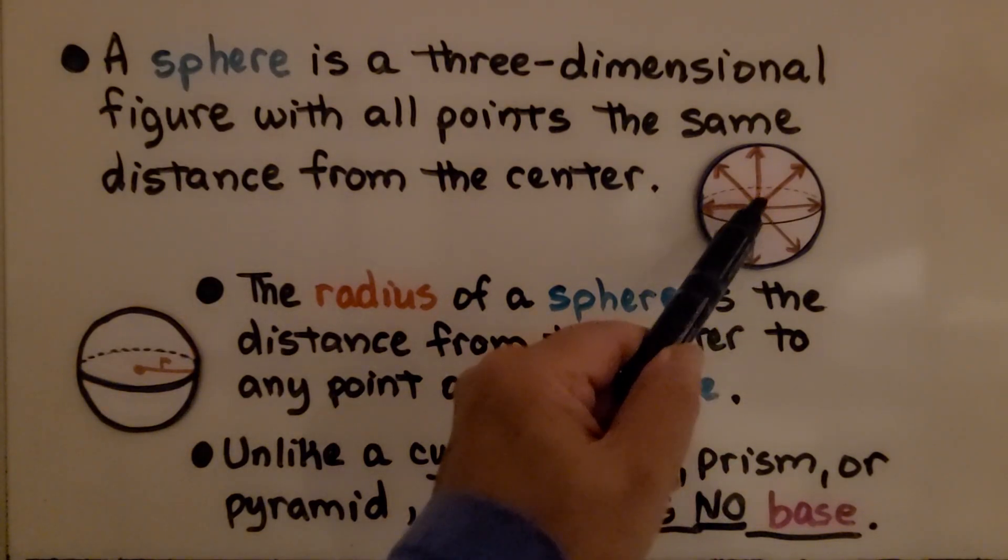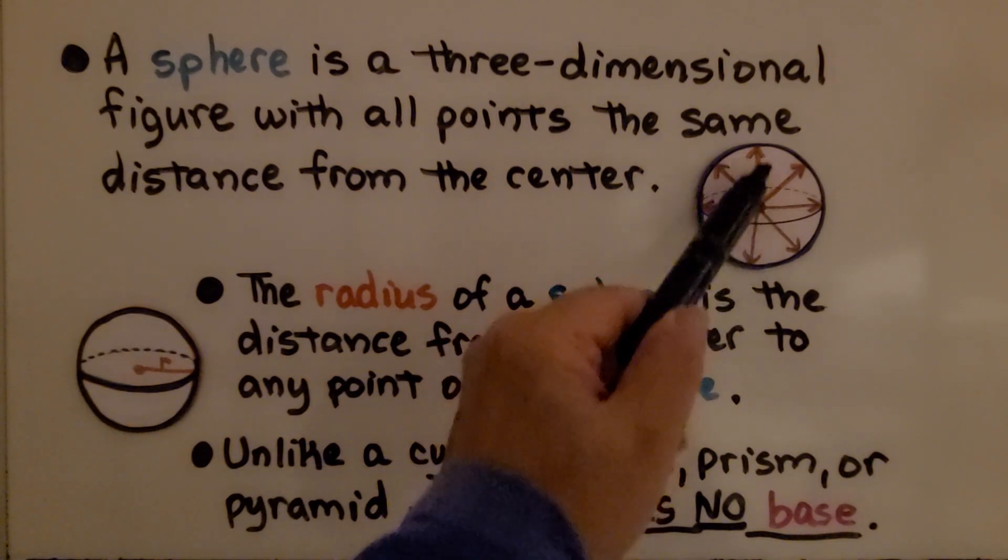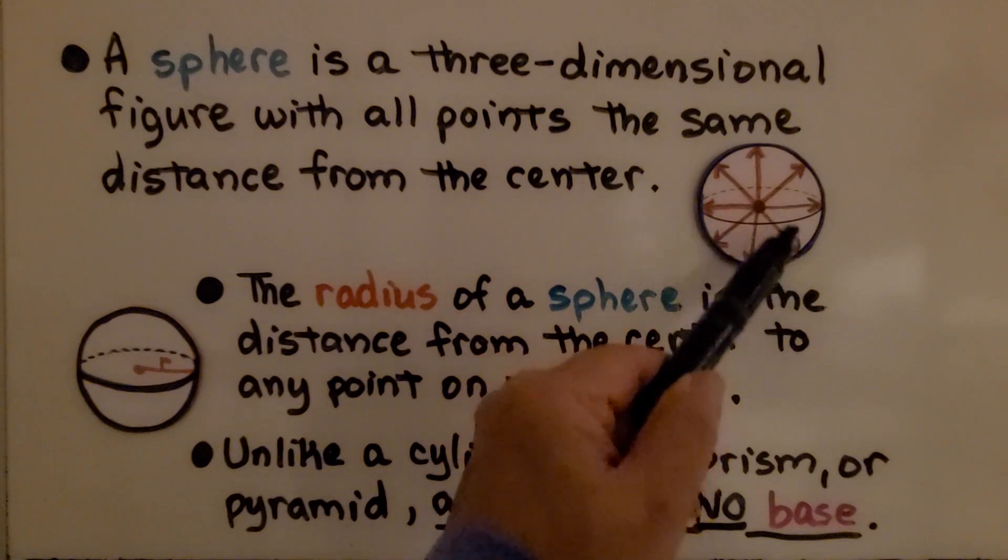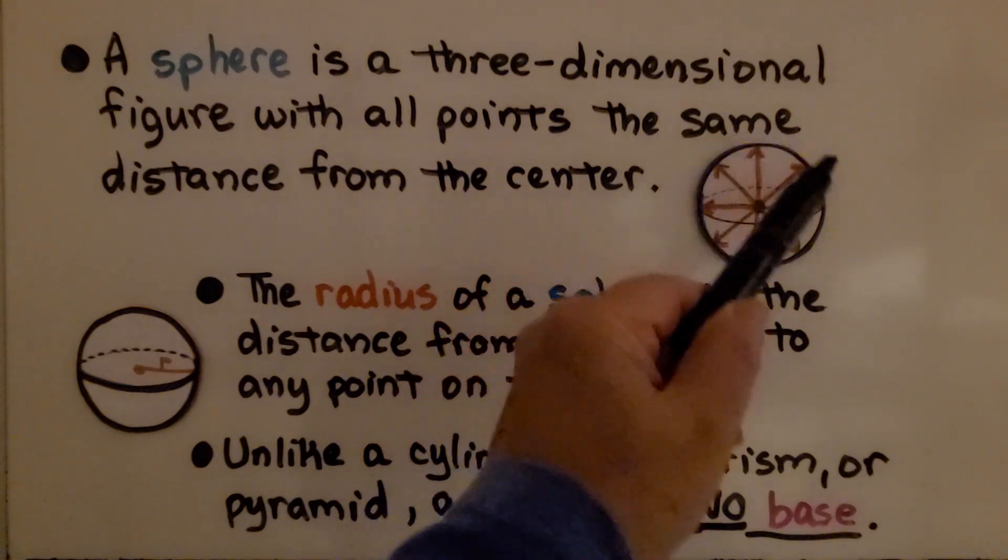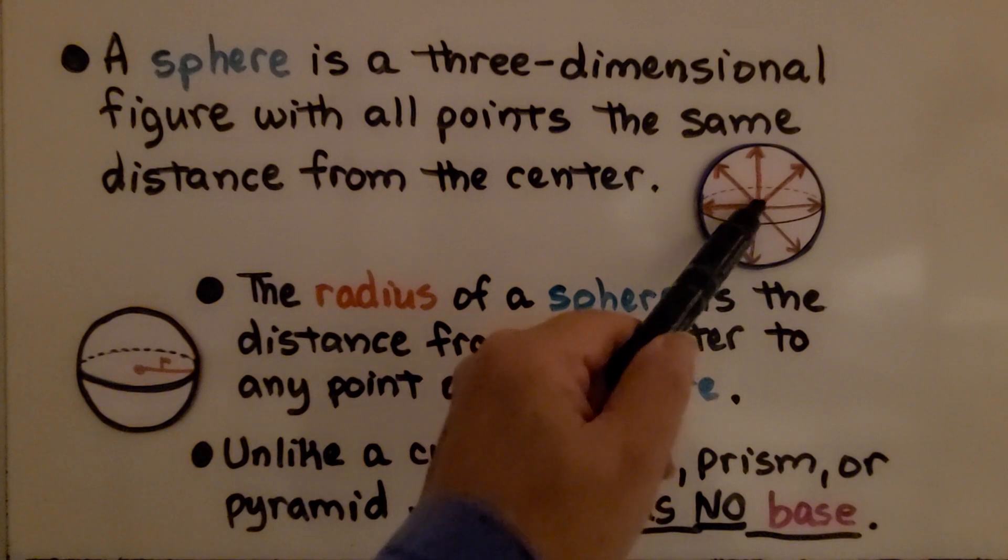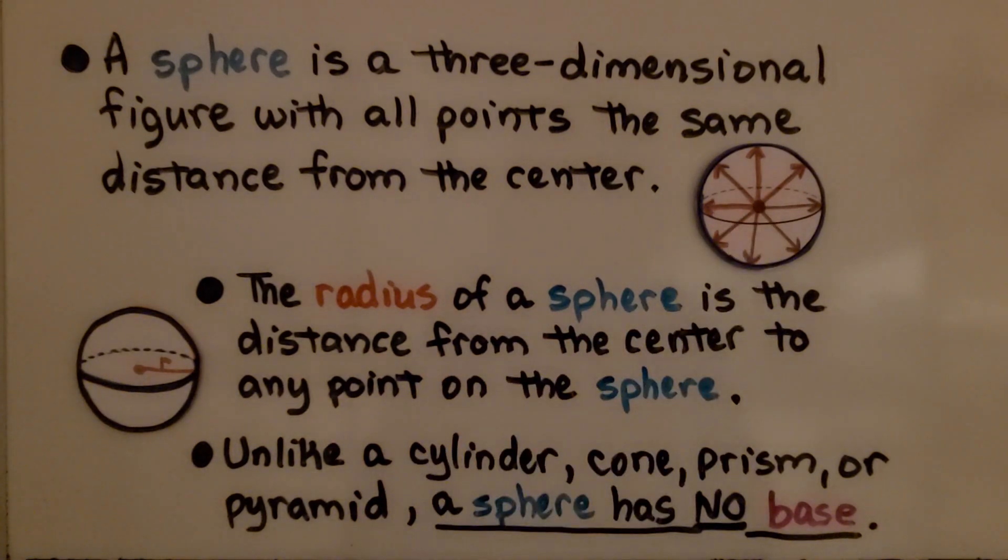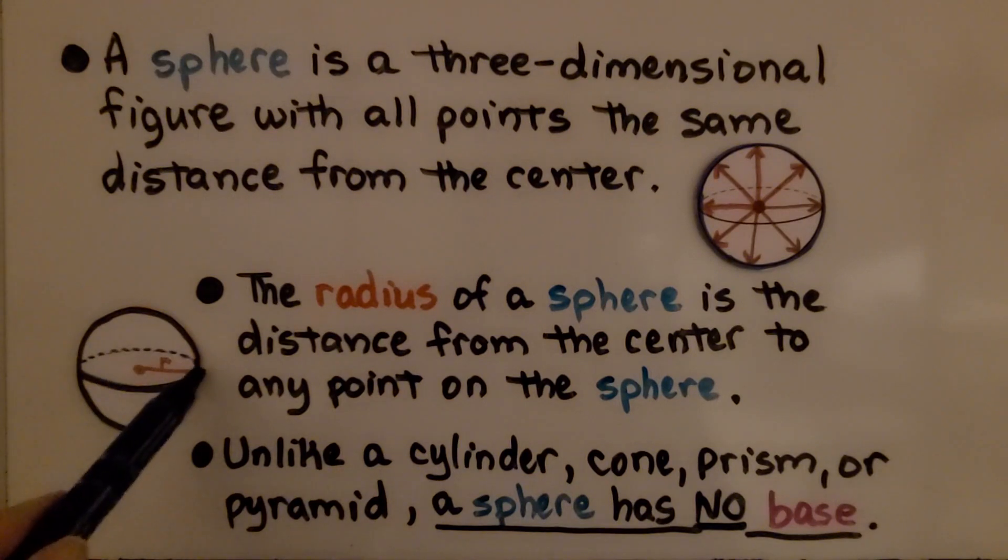Imagine a sphere with a center point at the very inside core and there are points going in every direction from the center to all these points around here. These are all the same distance from the center. The radius of a sphere is the distance from the center to any point on the sphere.